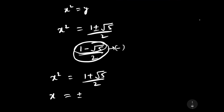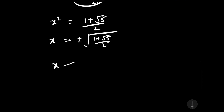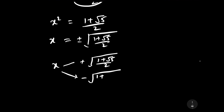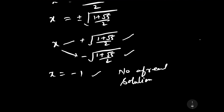Therefore we consider only x squared equals (1 plus square root 5) divided by 2, giving x equals plus or minus square root of (1 plus square root 5) divided by 2. Combined with x equals minus 1 found earlier, there are three real solutions in total.